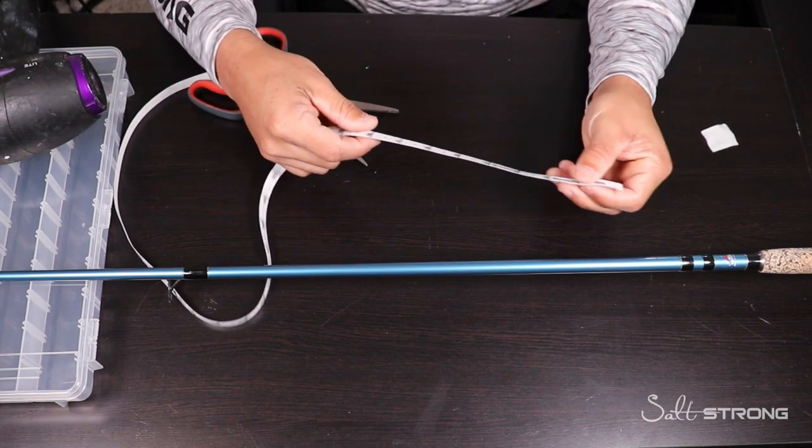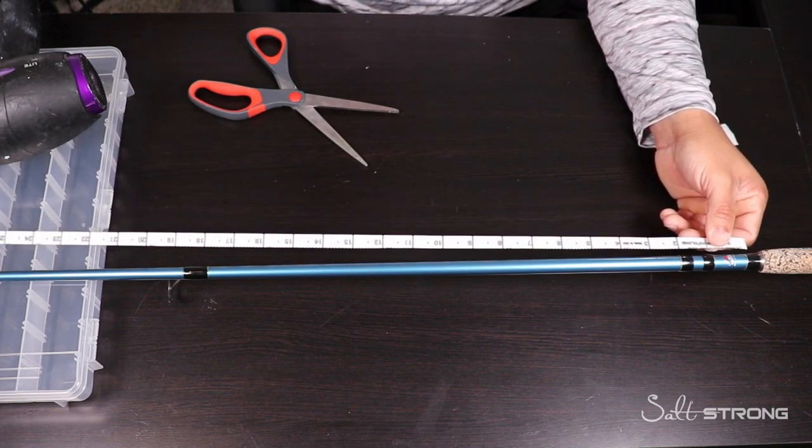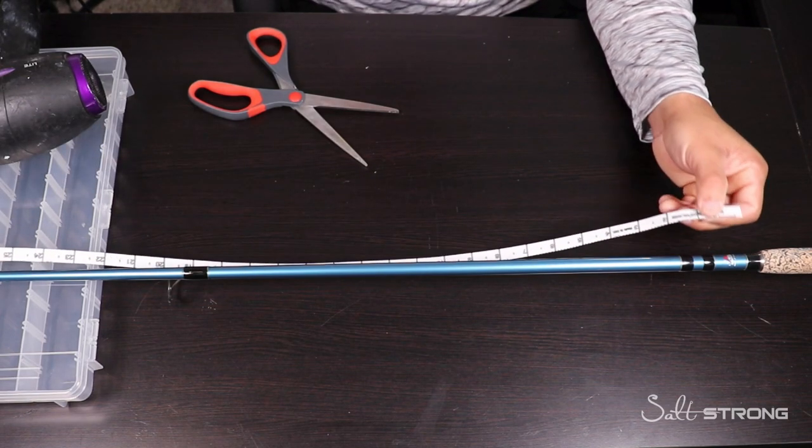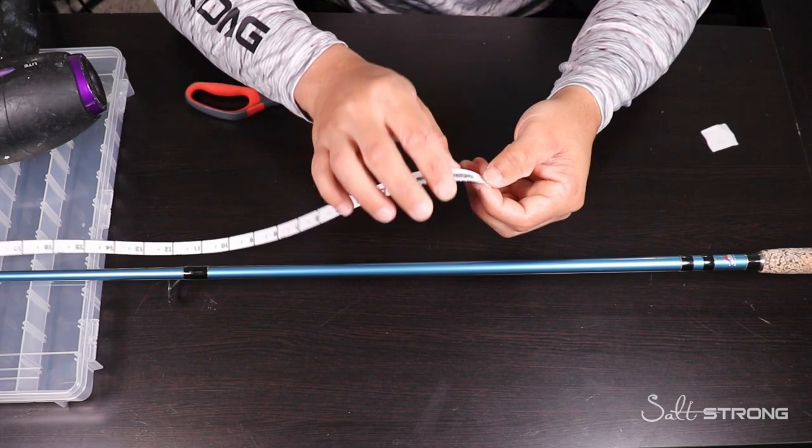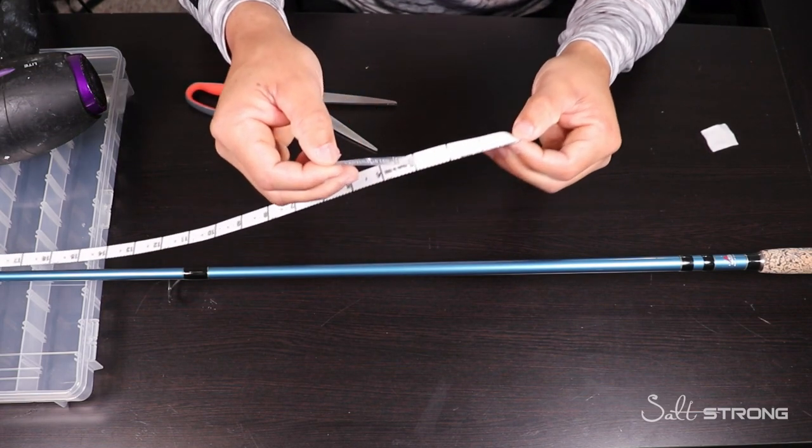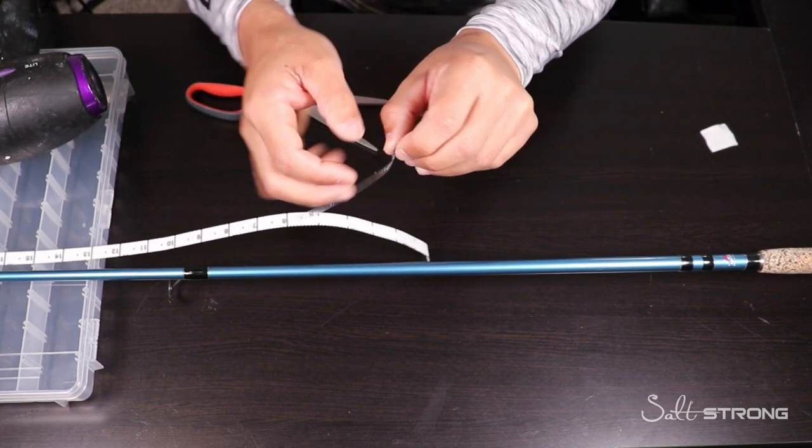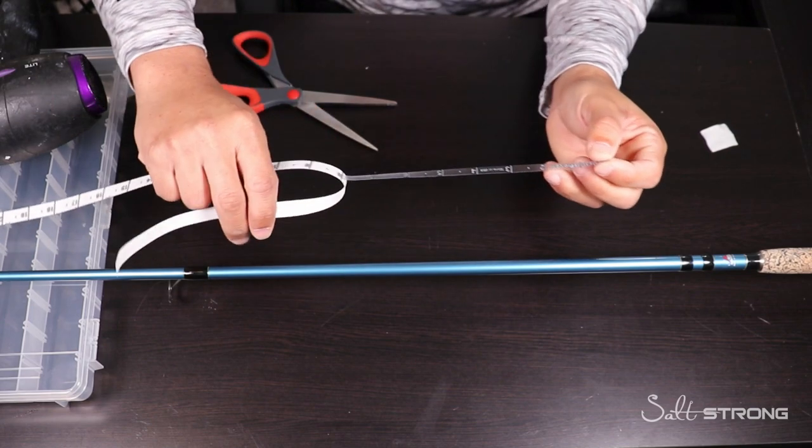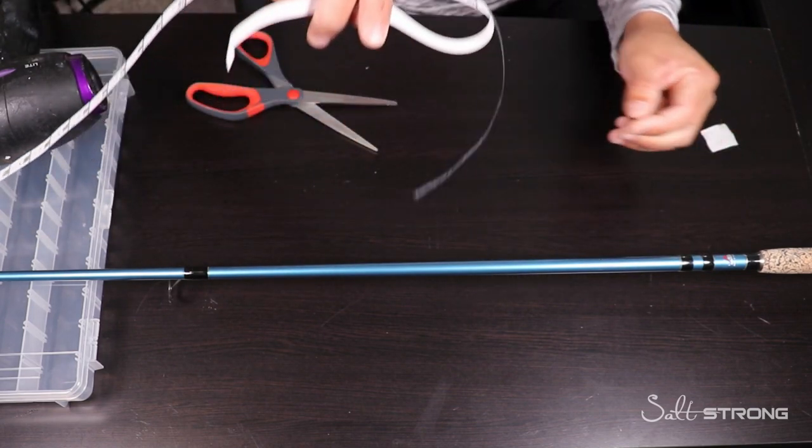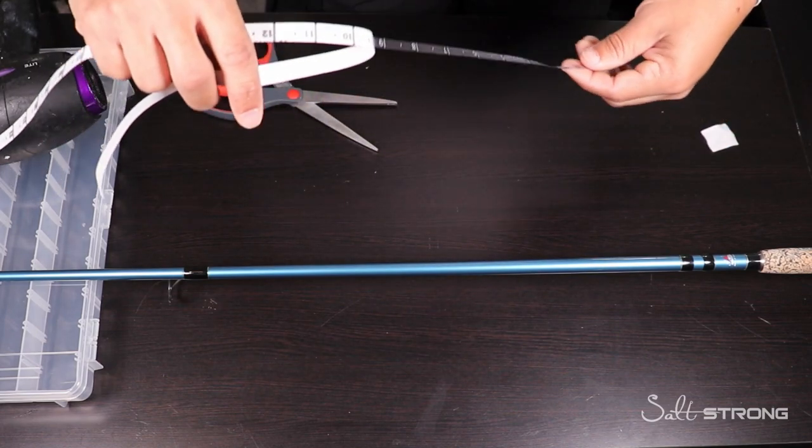So what we're going to do, we're going to start peeling the tape off on one side. As you can see it is clear like I said before. Then when you put this tape on the rod, what you want to do is first make sure that it is centered. Let's go ahead and stand up here.